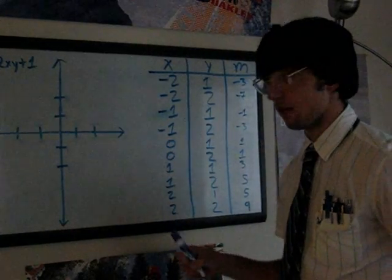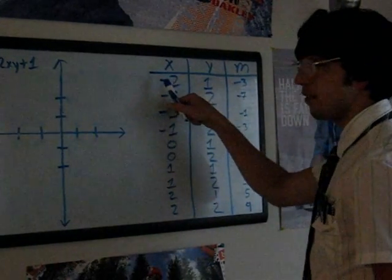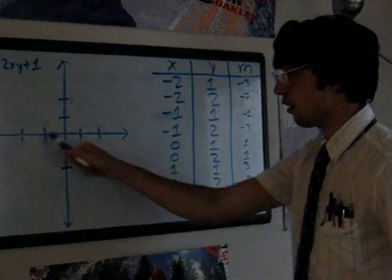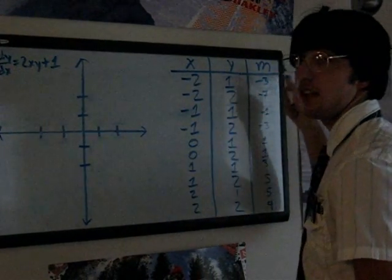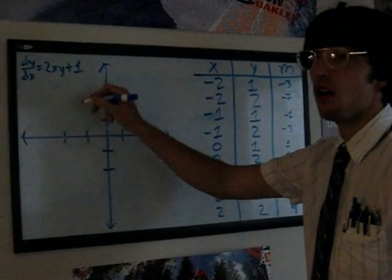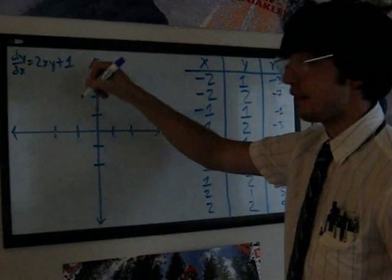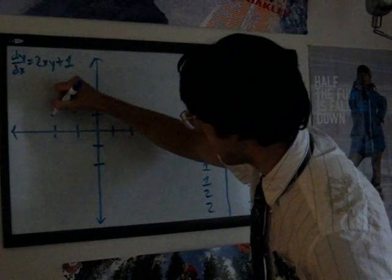Okay. Now, to draw a slope field. Now, you take your point, negative 2, negative 1. You go there. Right there. You go, what's the slope? What's the slope? It's negative 3. You go to the point. You go, oh. Now, draw a slope of negative 3. It looks like this.